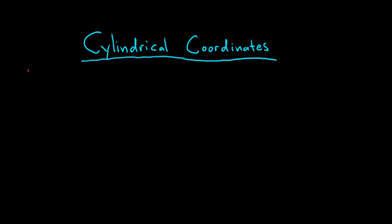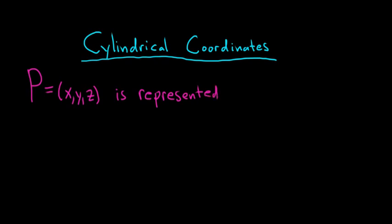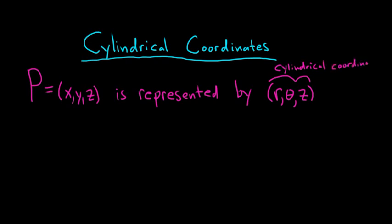A point P, which we can call (x, y, z) in rectangular, is represented by another ordered triple — except this time it's (r, θ, z). So r and θ are from polar coordinates, and then z. This is a cylindrical coordinate. Certain functions can be graphed or represented very easily with cylindrical coordinates, and we'll look at that a little bit later.